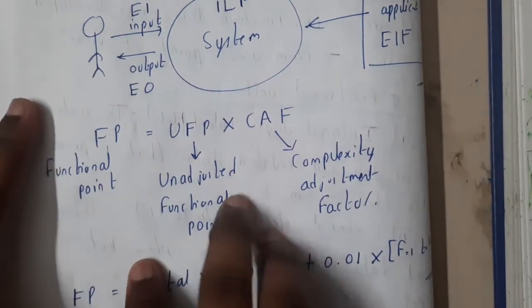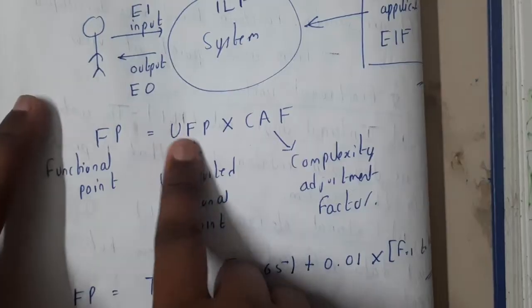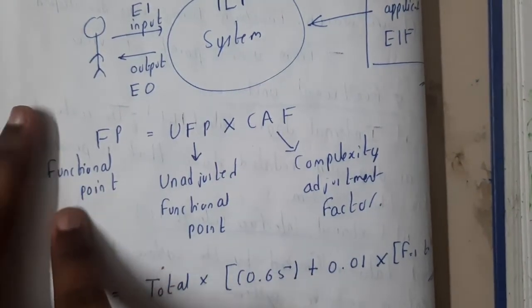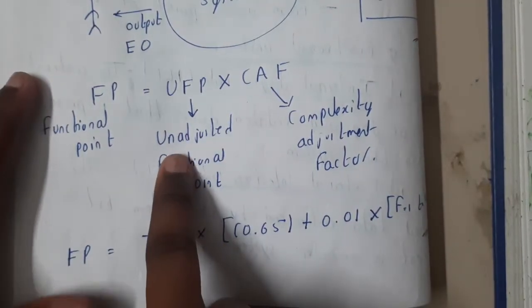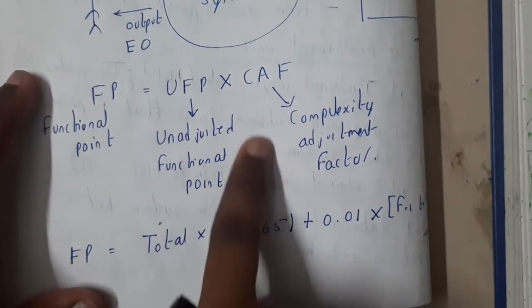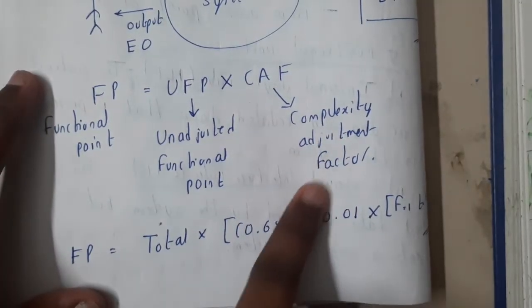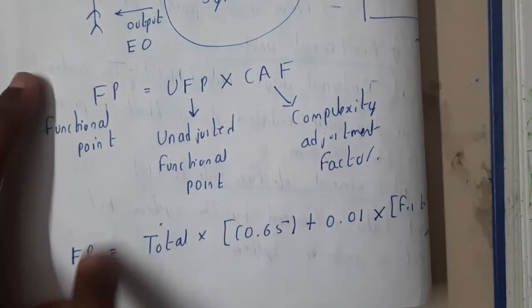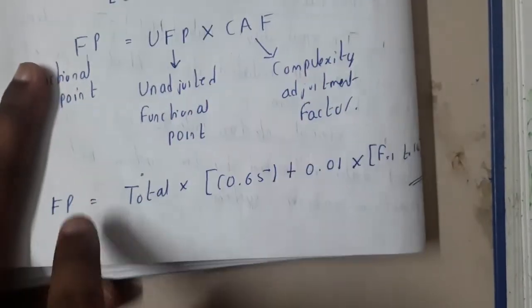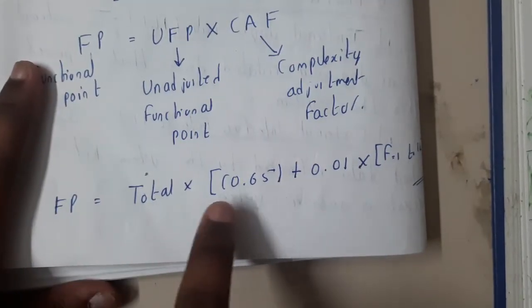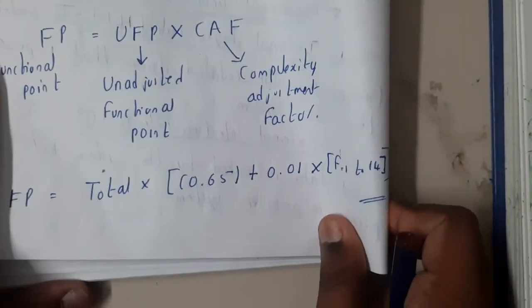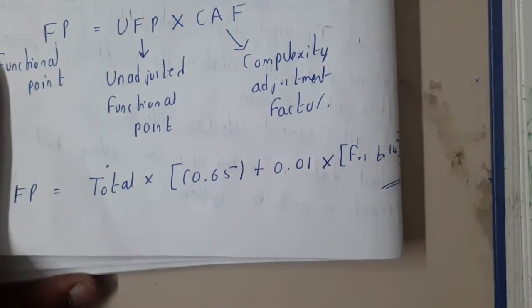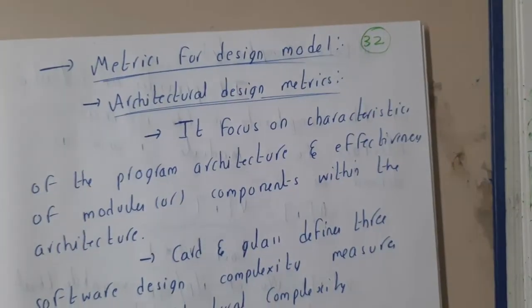The formula is: FP = UFP × CAF, where FP indicates Function Point, UFP indicates Unadjusted Functional Point, and CAF indicates Complexity Adjustment Factor. If you substitute these, you get: FP = Total × (0.65 + 0.01 × ΣFi), where i equals 1 to 14. You will be giving the values of F from 1 to 14 and based on that you will get the result.